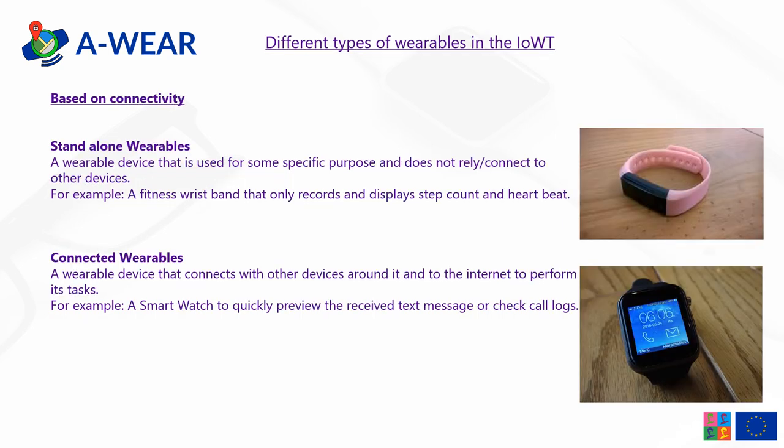Wearables can also be classified based on their connectivity. For instance, we can have standalone wearables or connected wearables. A standalone wearable is a device used for some specific purpose and does not connect to any other device around it. For example, a fitness wristband that only records and displays your step counts and heartbeat but does not connect to the internet or other devices. Whereas most wearable devices today are connected wearables — a device that connects with other devices around it and to the internet to perform its task. For instance, a smartwatch to quickly preview received text messages on your cell phone or check the call logs for the day.